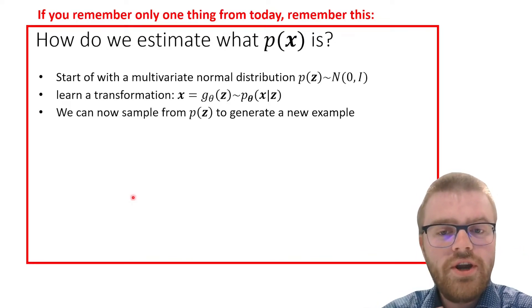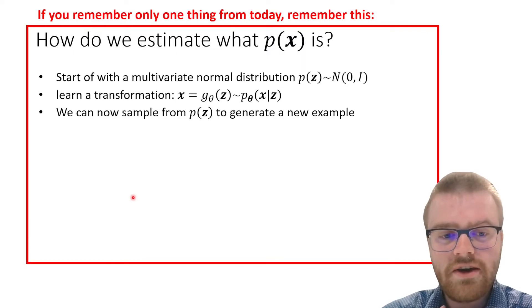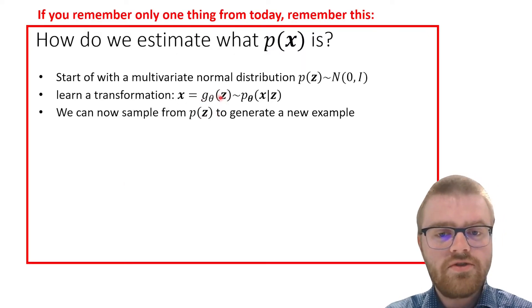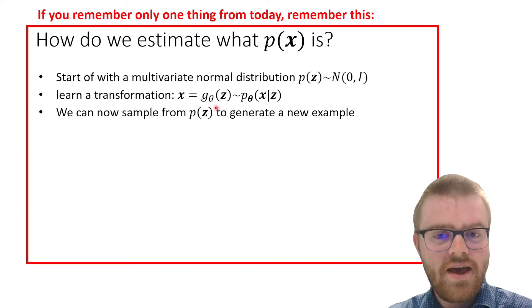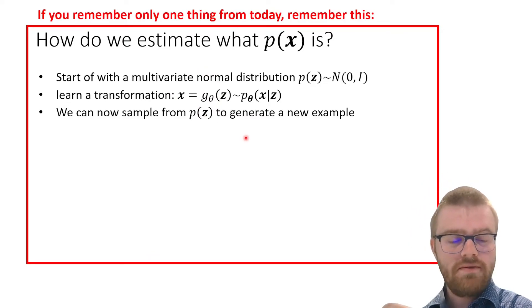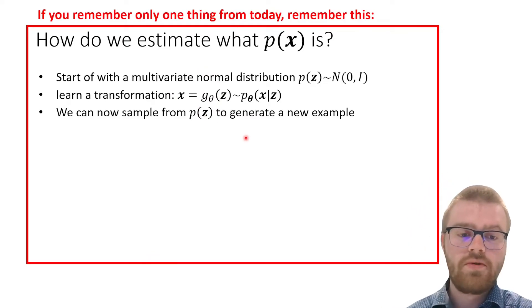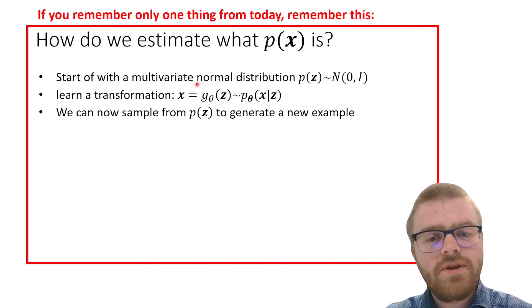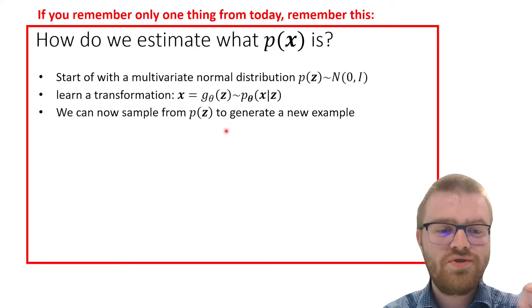And then we will learn a transformation, a generative transformation g of theta on the z to create x. And now we can sample from z, which is just a normal distribution and your computer can easily sample from that, and then perform this function on z to create x.